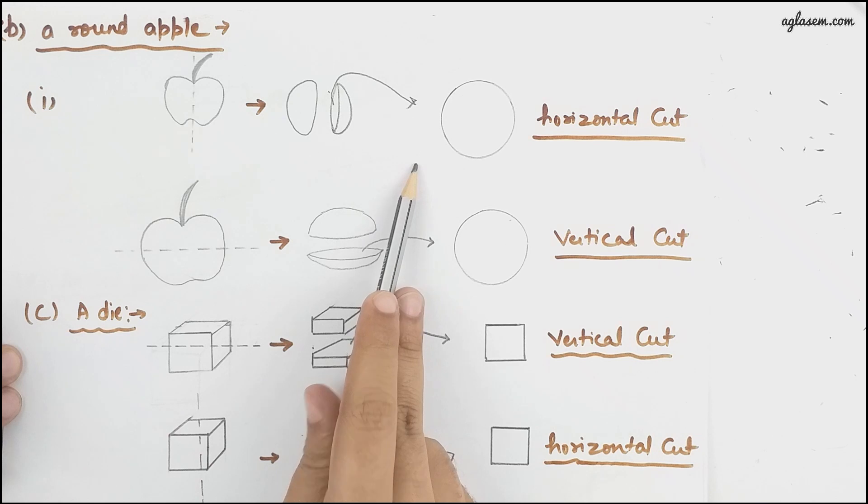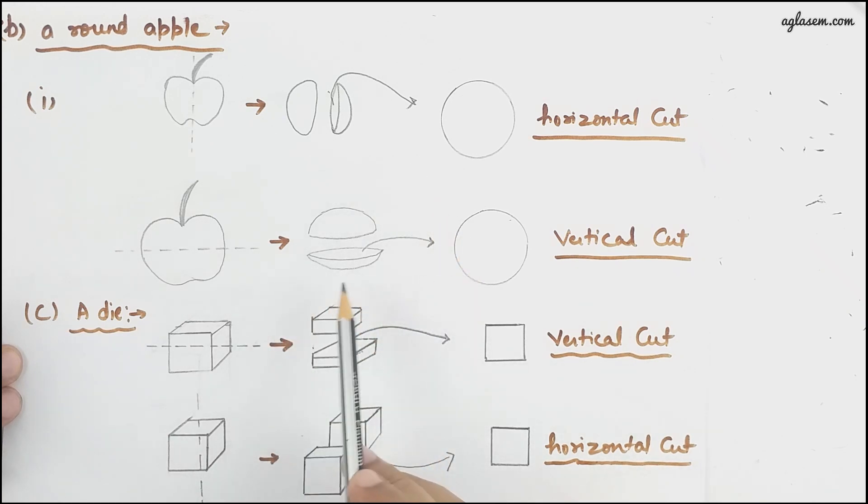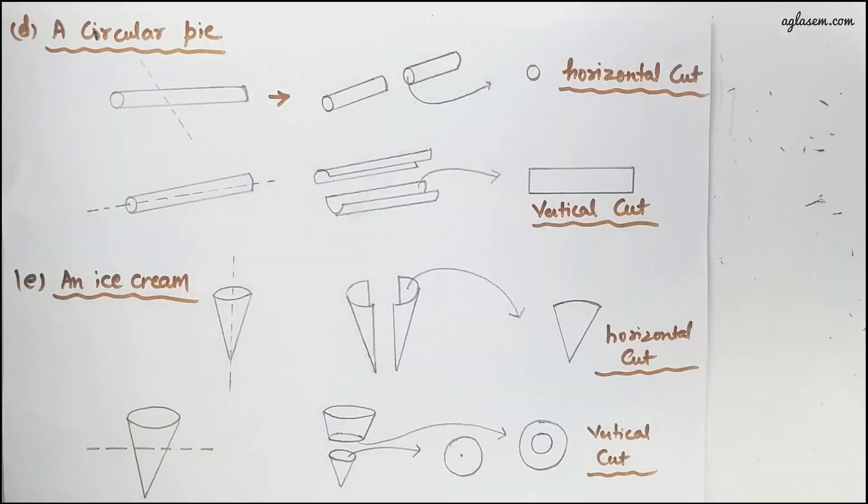To a dice, if you give a cut it will be like this - the vertical cut and horizontal cut will be this way. And lastly, to a circular pipe.